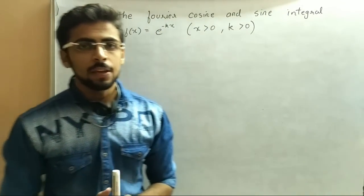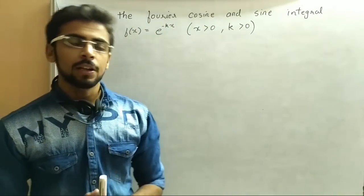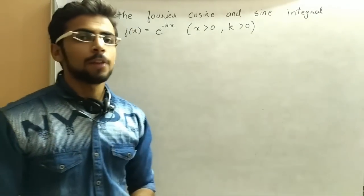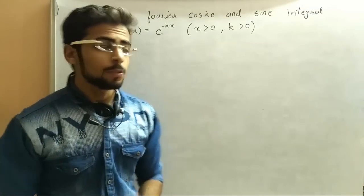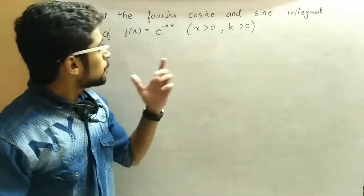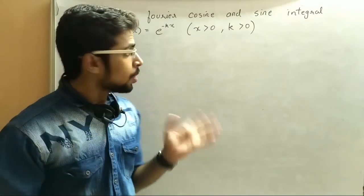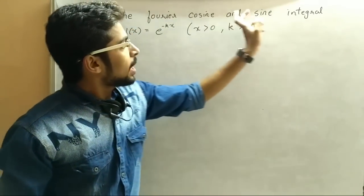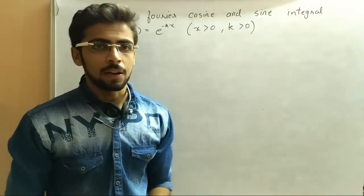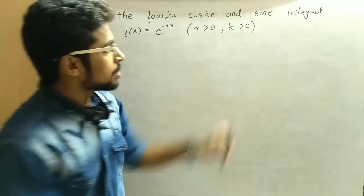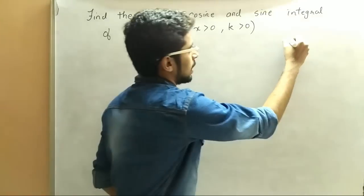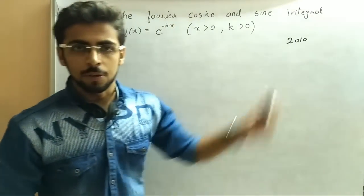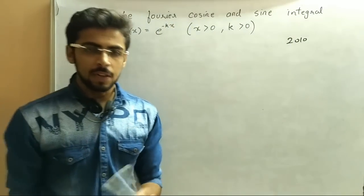In this video we will see a Fourier integral example. So basically, question kis tarah se hota hai Fourier integral ka. The question is either to find the Fourier integral, or it is asked as Fourier cosine and sine integral. By the way, this question was asked in 2010 in the GTU. So let us start.